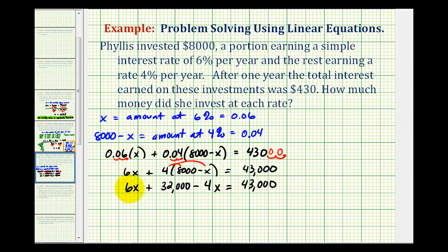Let's combine our like terms. 6x minus 4x is 2x. So we have 2x plus 32,000 equals 43,000.